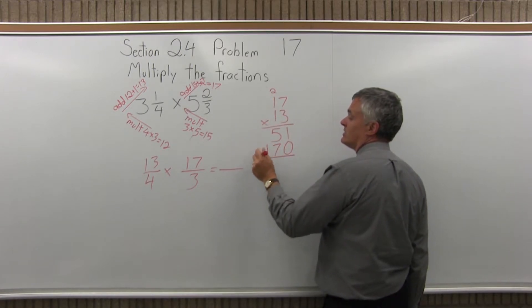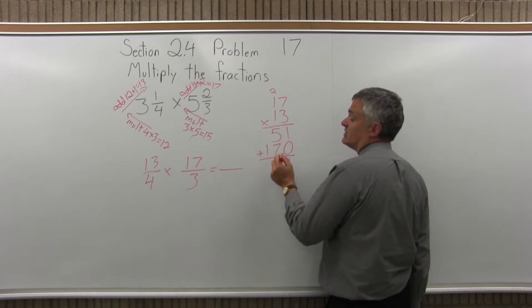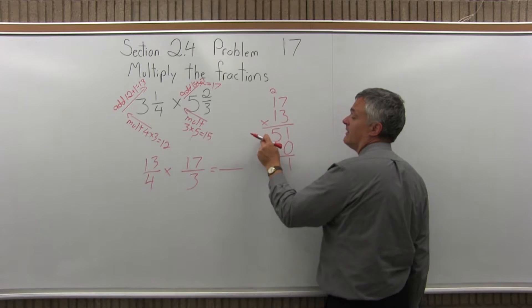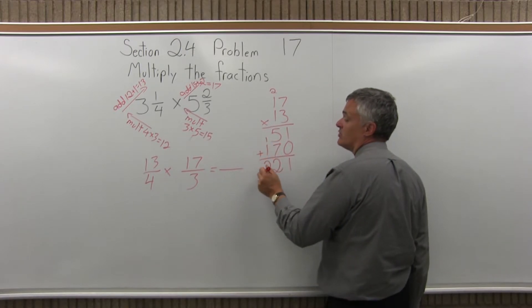And now I add the results. 1 plus 0 is 1, 5 plus 7 is 12. So for 12, I write the 2, carry the 1, and then 1 plus 1 more is 2. I have 221.